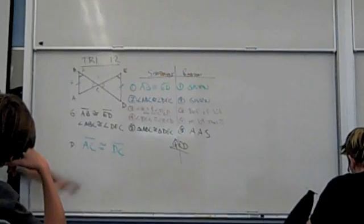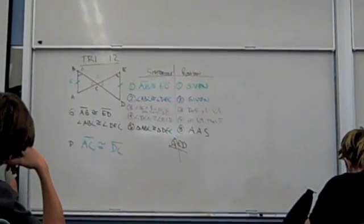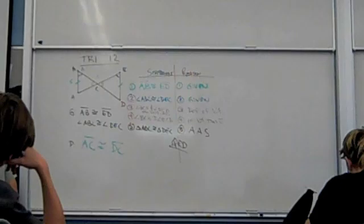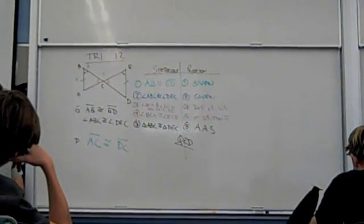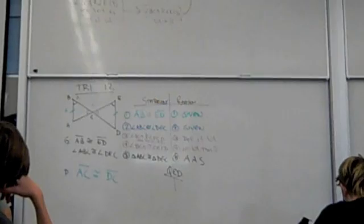Well, if you establish that the two triangles are congruent, then that means that all the sides, all the corresponding sides and angles are congruent to each other, so it's just like adding one more step.